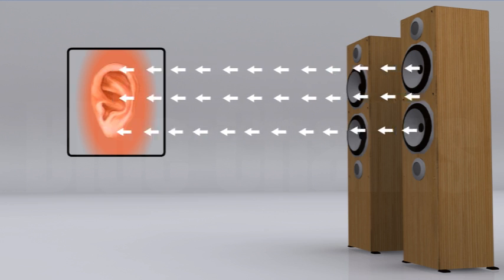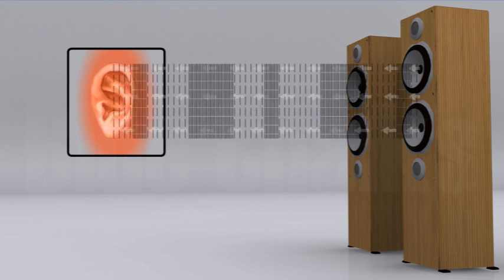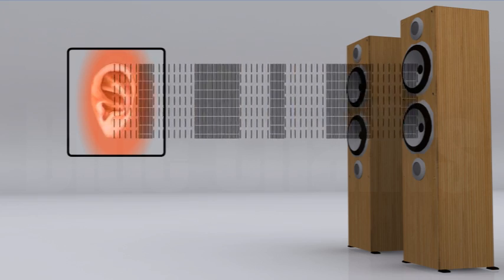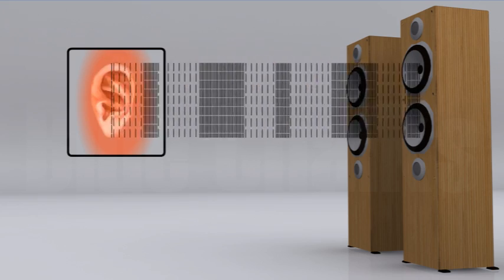When an object vibrates, it sets the particles of the medium around it vibrating. The particles do not travel all the way from the vibrating object to the ear.